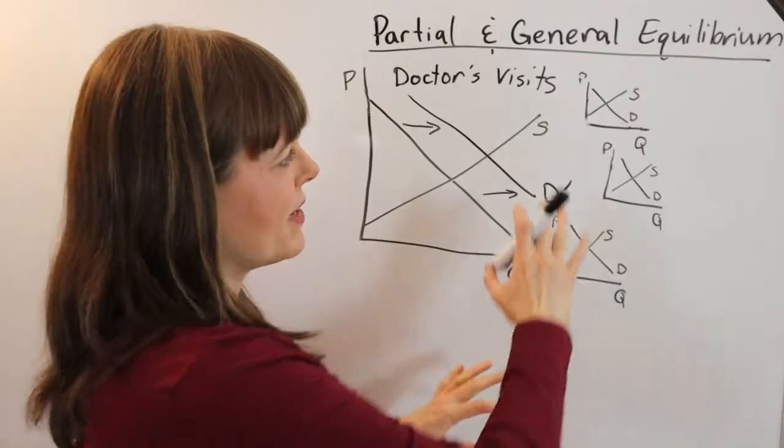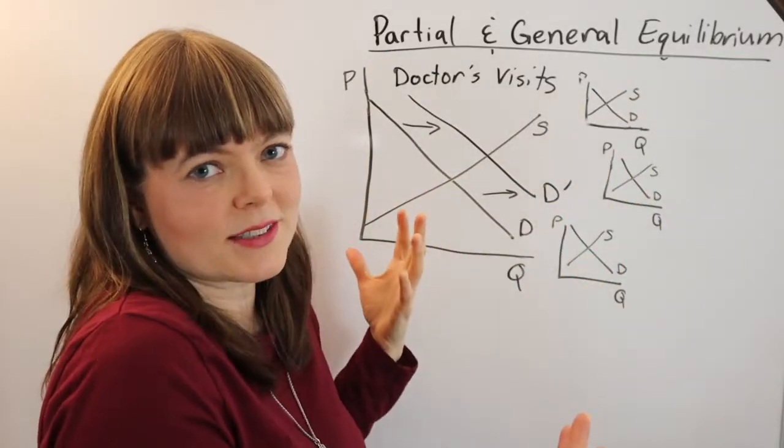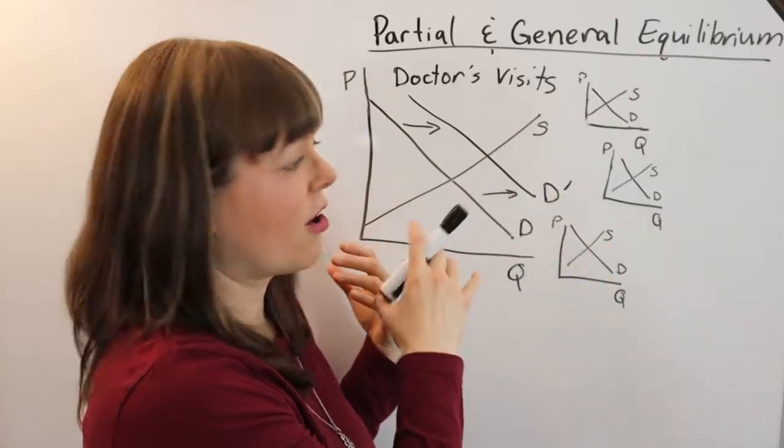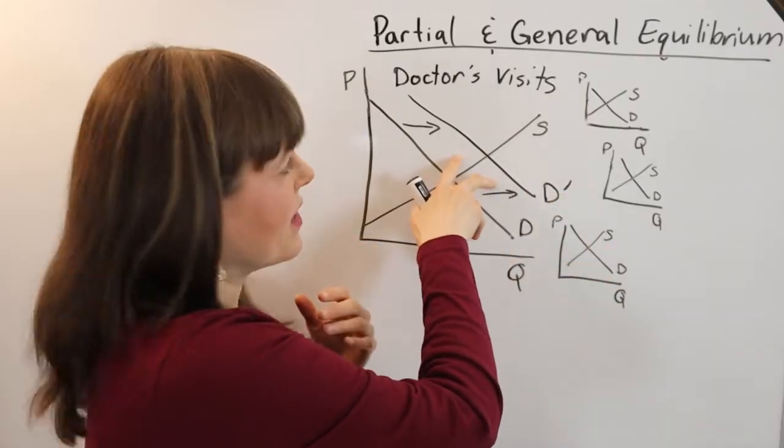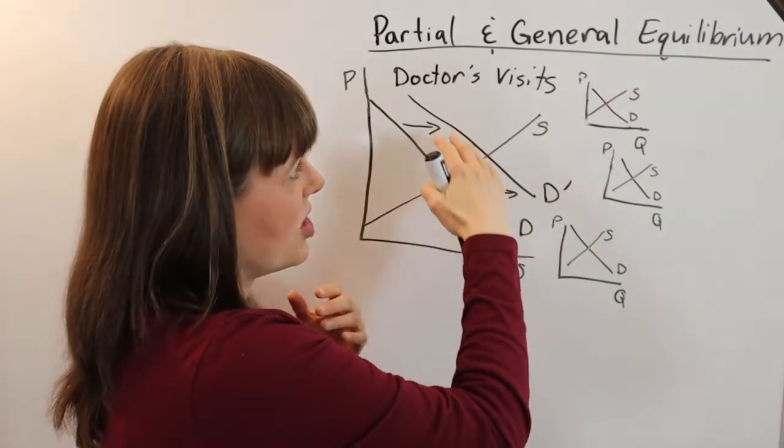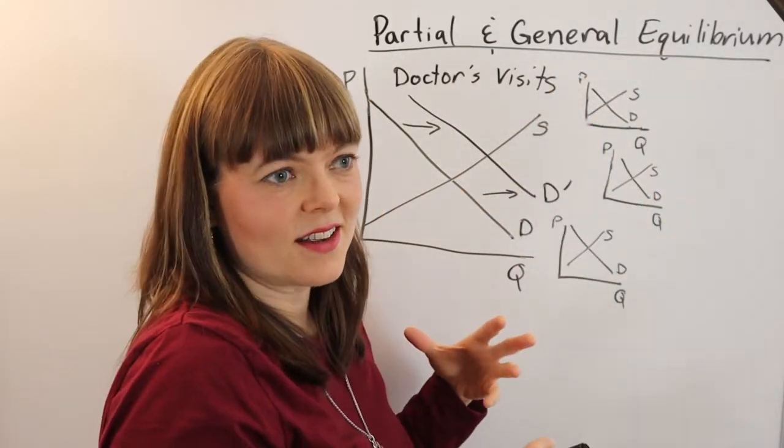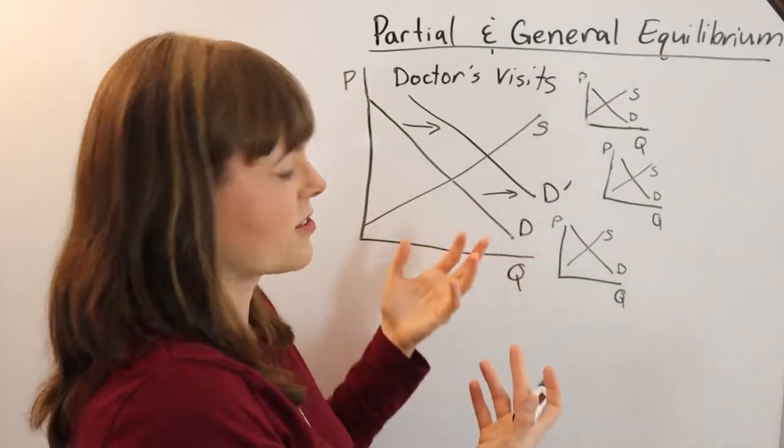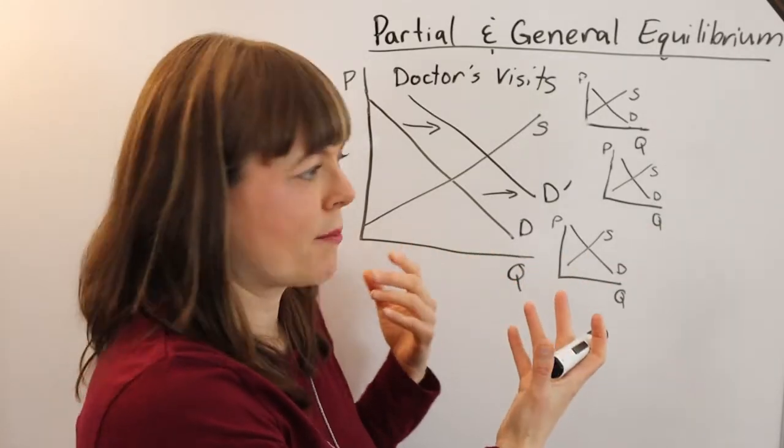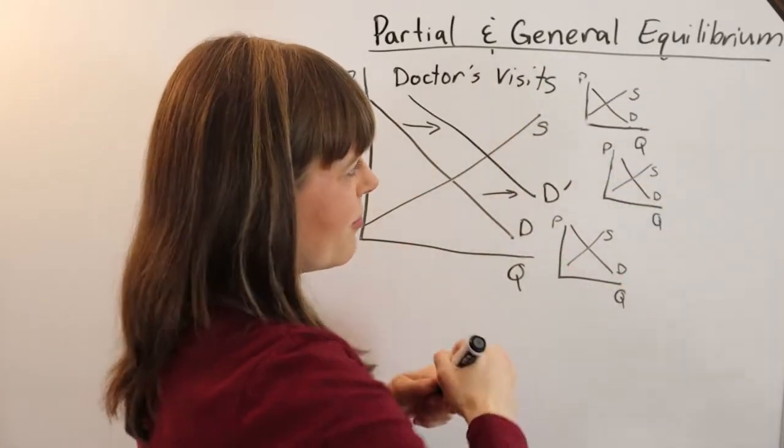General equilibrium basically accounts for every single possible market, whether it exists now or not, that could respond to this market changing by introducing Medicare, or any other market that could pop up after Medicare is introduced to serve the newly insured population. That's the difference.